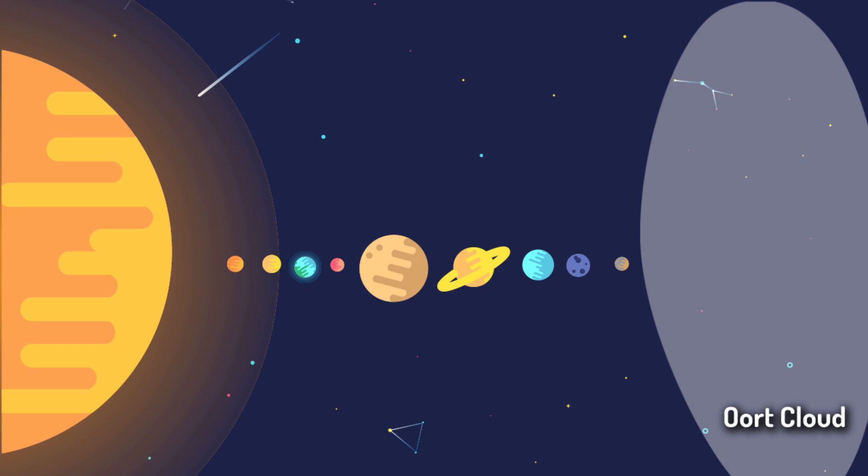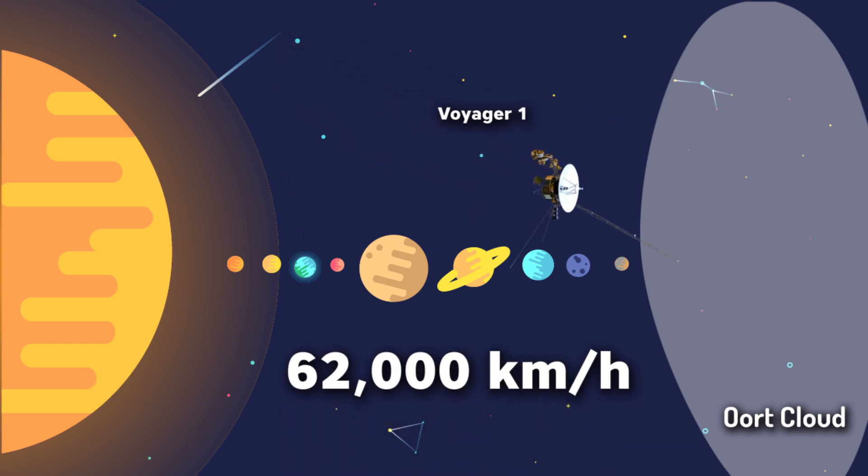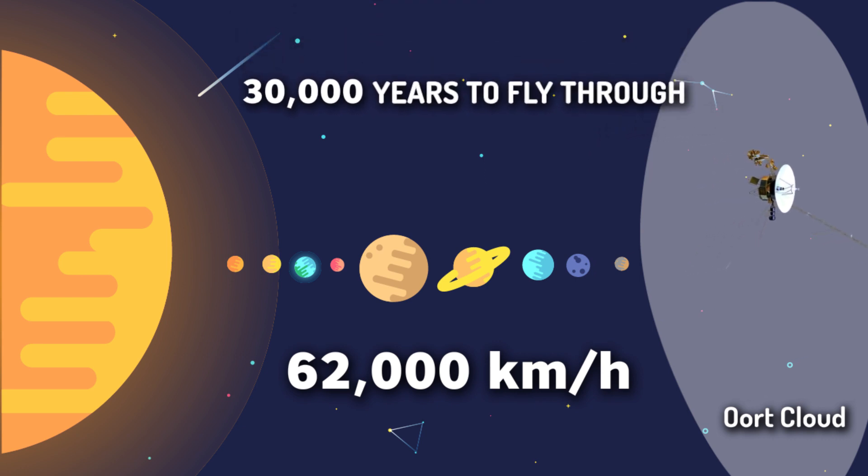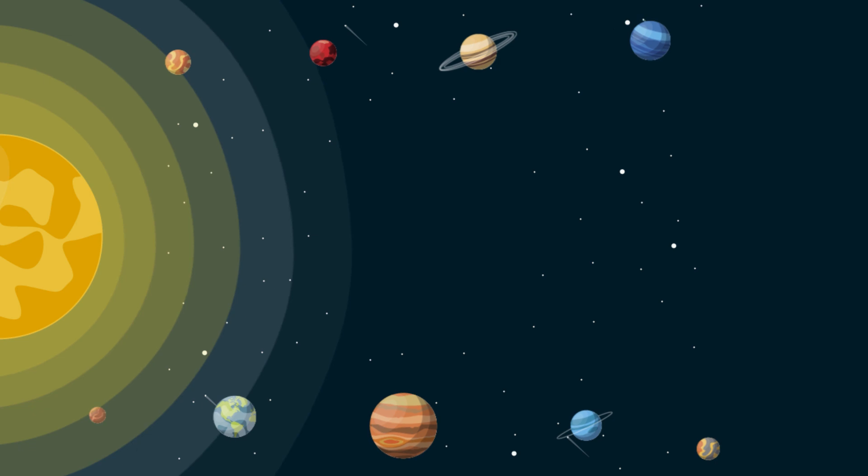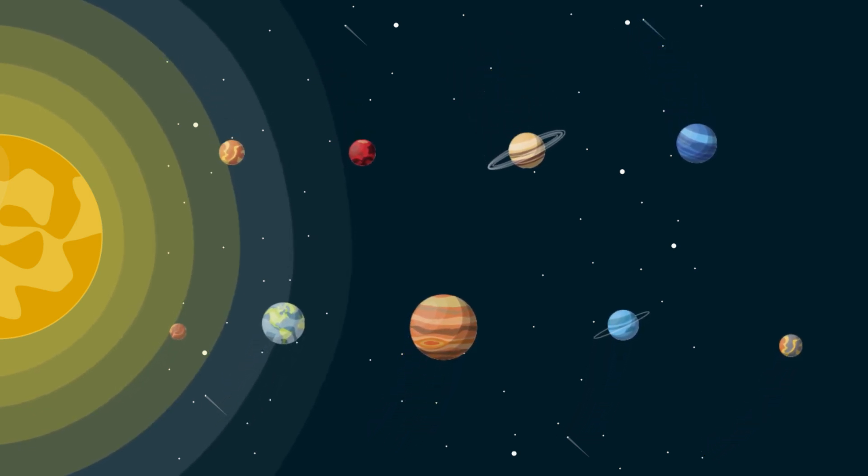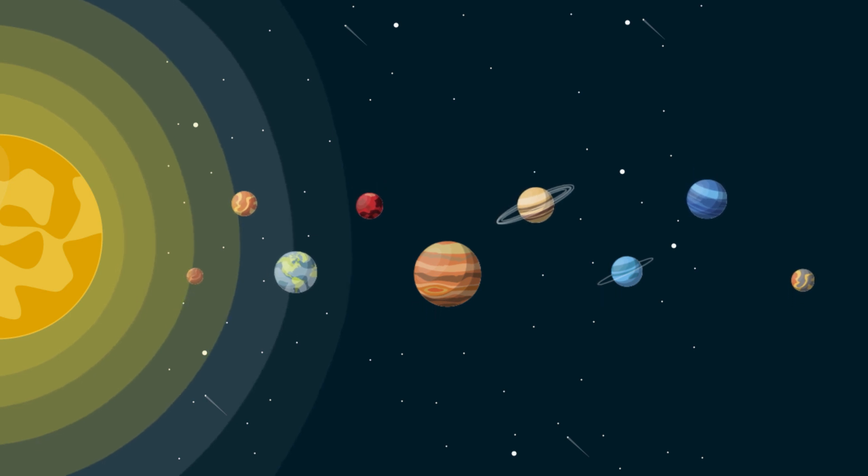Even the Voyager 1 spacecraft, now flying from us at a speed of 62,000 kilometers an hour, will take 30,000 years to fly through the Oort Cloud. We will not go terribly far just to the edge of our own solar system, but we need to get a fix on how big a space is and what a small part of it we occupy.